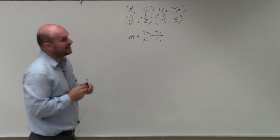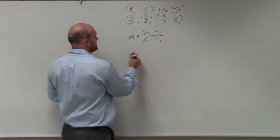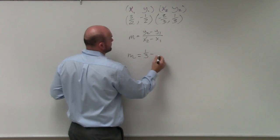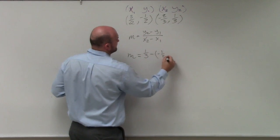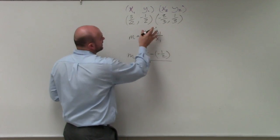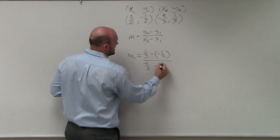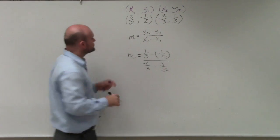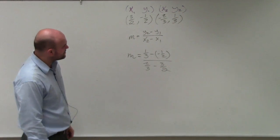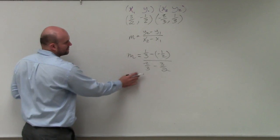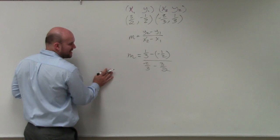So now I'm going to go ahead and plug them into my formula to identify my slope. So I have y2 is 1 third minus y1, which is negative 1 half. x2 is negative 2 thirds minus 3 halves. If you guys remember, whenever adding and subtracting fractions, we have to be able to get common denominators.